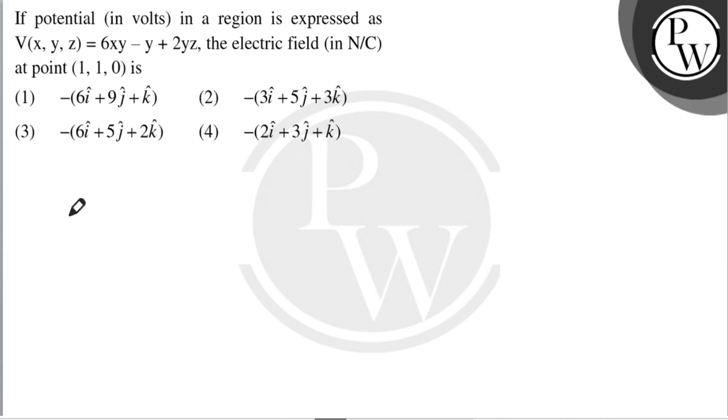As we know, electric field ki value is equal to minus partial differentiation of potential with respect to x, i cap, plus del V over del y, j cap, plus del V over del z, k cap.